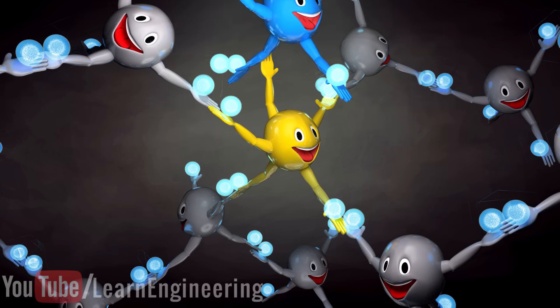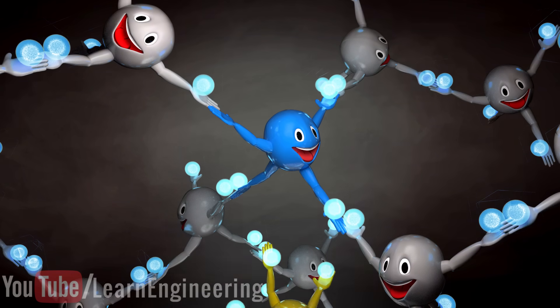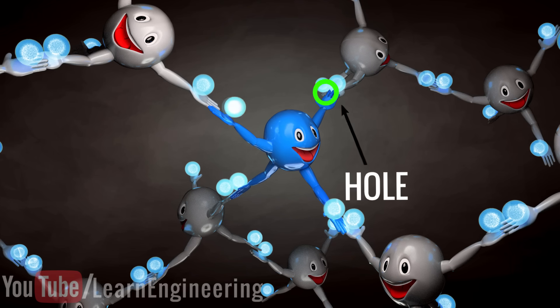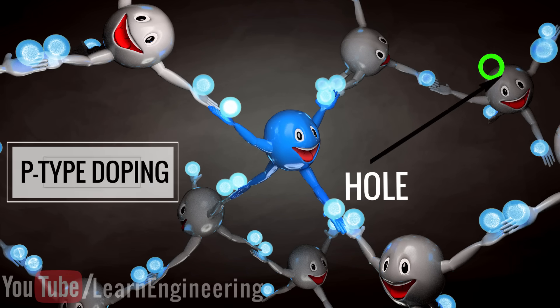We can also add impurities with fewer electrons, which will also increase the conductivity of pure silicon. This is known as P-type doping.